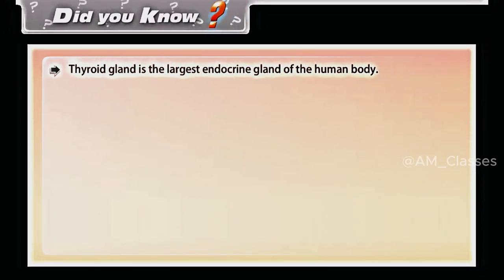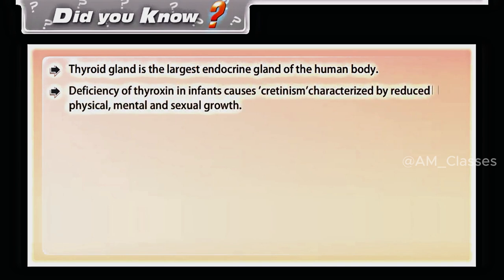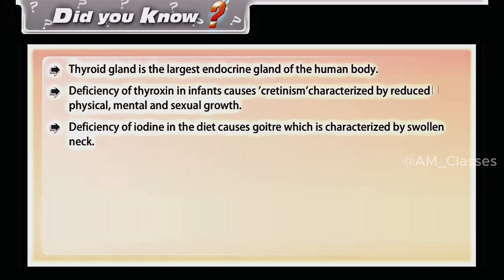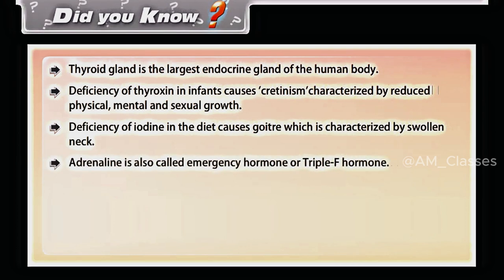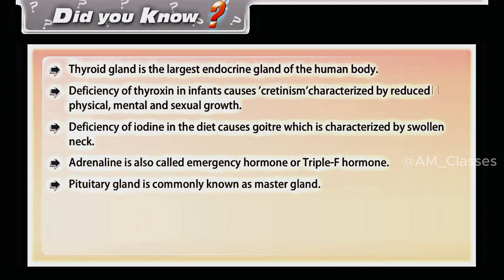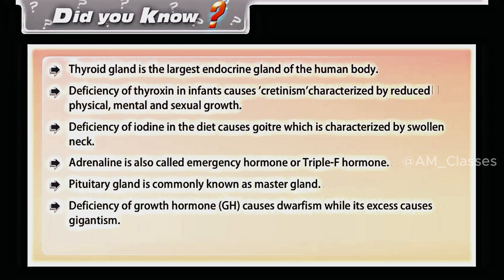The thyroid gland is the largest endocrine gland of the human body. Deficiency of thyroxine in infants causes cretinism, characterized by reduced physical, mental and sexual growth. Deficiency of iodine in the diet causes goiter, which is characterized by swollen neck. Adrenaline is also called the emergency hormone or fight-flight-fright hormone. The pituitary gland is commonly known as the master gland — deficiency of growth hormone (GH) causes dwarfism while its excess causes gigantism. Deficiency of insulin causes diabetes.